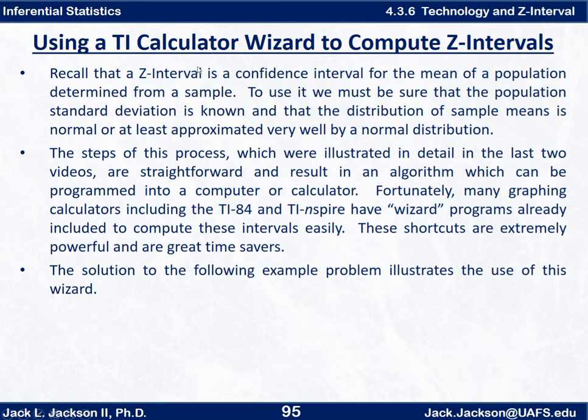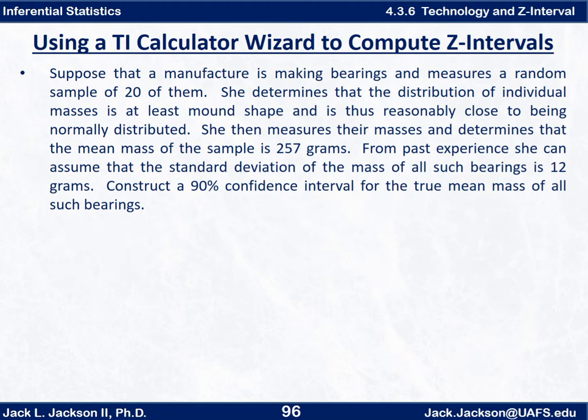Remember that a z interval is a confidence interval for the mean of a population determined from a sample, where the standard deviation of the population is known and the distribution of sample means is normal or at least approximated very well by a normal distribution. We've gone through these steps in previous videos, and this one we're going to show you how the shortcuts work. So let's do an example here.